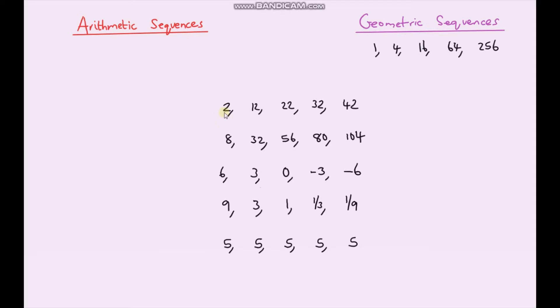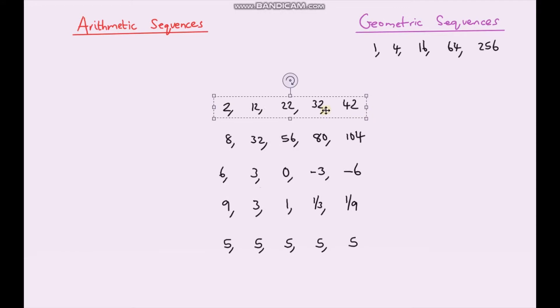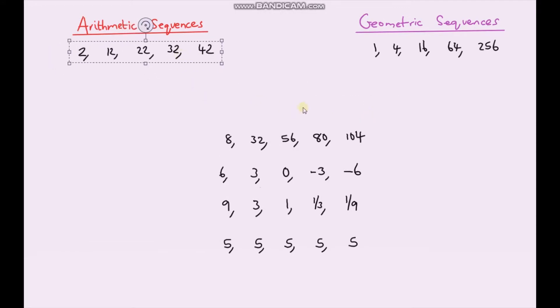For the next one, to go from two to twelve I'm adding on ten. Continuing that pattern: twelve plus ten is twenty-two, plus ten gives thirty-two, plus ten gives forty-two. So this one is an arithmetic sequence.